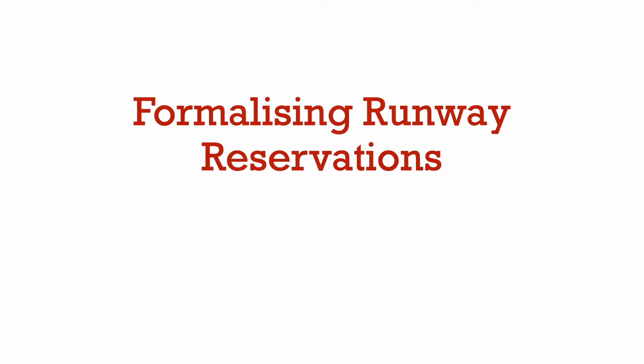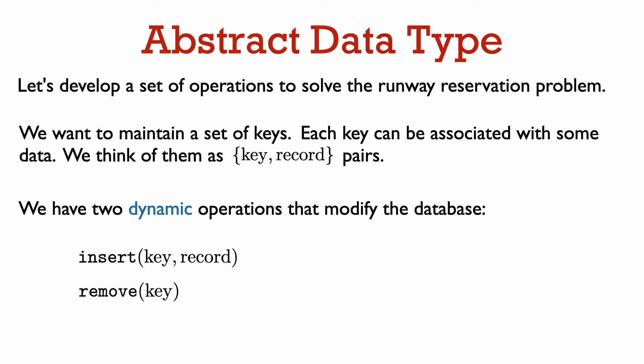Now let us formalize the runway reservation problem so we can see exactly what operations we need our data structure to support. This will let us develop an abstract data type to solve the problem. Exactly what data the data structure will hold and the set of operations that can be performed on this data. The data structure will be organized around the landing times and we think of the landing times as being keys. Each key can be associated with some data. For example, this might be the flight number, the type of plane, etc. that is requesting the landing time. However, as far as the operation of the data structure is concerned, it is only the key values that matter. The data associated with a key is just carried around as a payload.